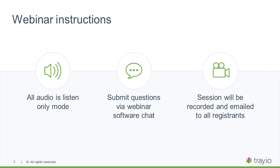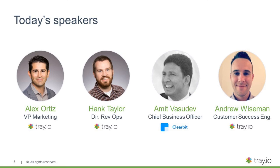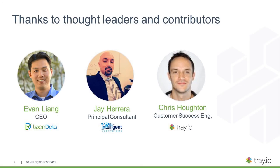Just sit back, relax, and listen to some really credible thought leaders here — excluding myself of course. This is Alex Ortiz, VP of Marketing at Tray. I've worked at places like Salesforce and Quantic Mind. We have Hank Taylor, our Director of RevOps at Tray — he's both a Marketo expert and Salesforce expert, and has come from companies like Grow.com and Neo4j. I call him our Swiss Army knife. We also have guest speaker Amit from Clearbit, Chief Business Officer.